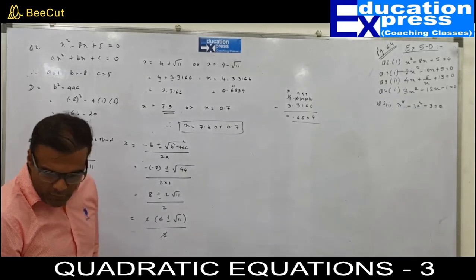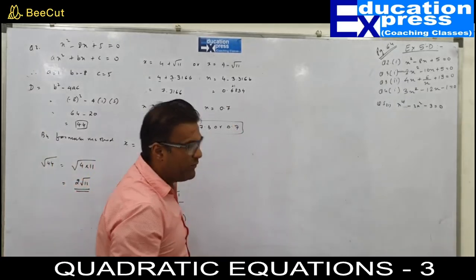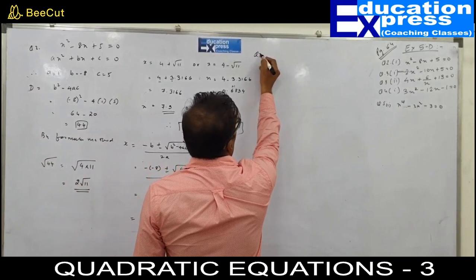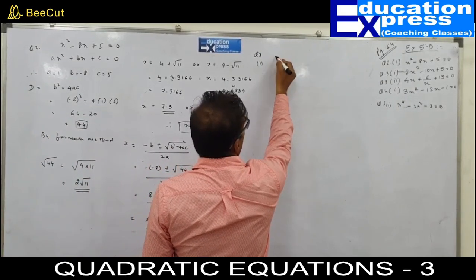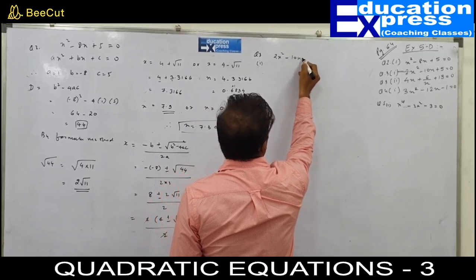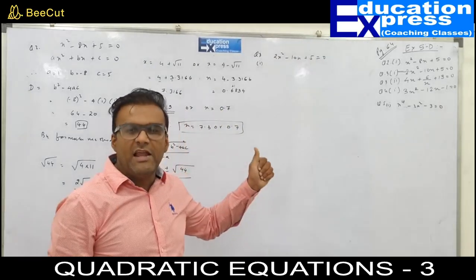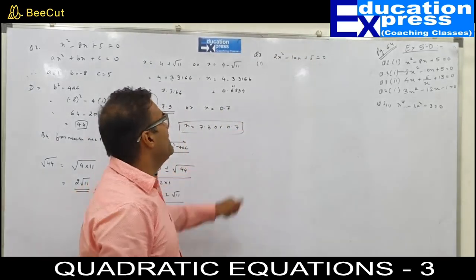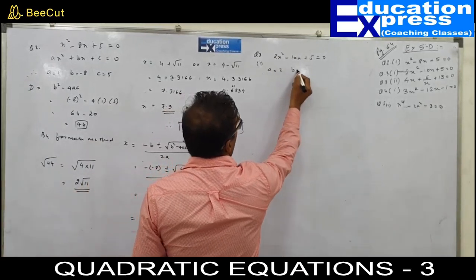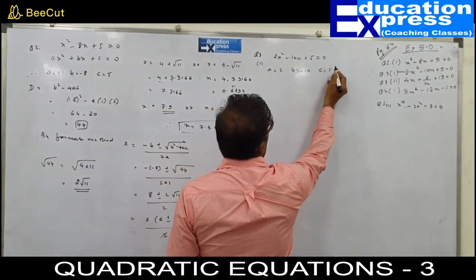Let us take one more similar type of example. Question number 3, part 1: 2x squared minus 10x plus 5 equals to 0. It is given in the standard form. Value of a is 2, b is minus 10, c is 5.